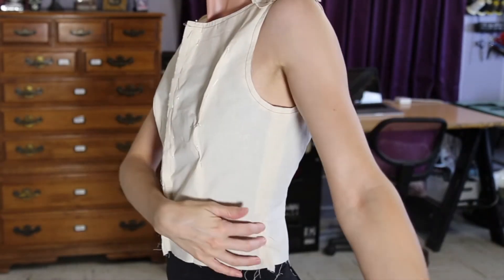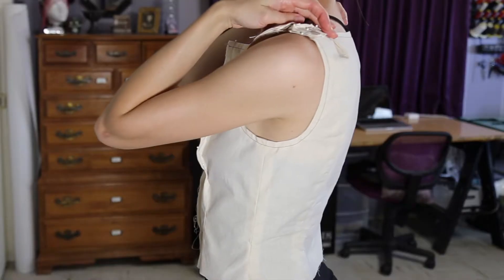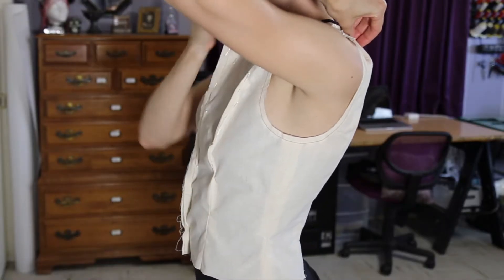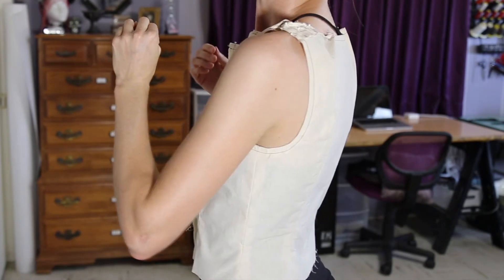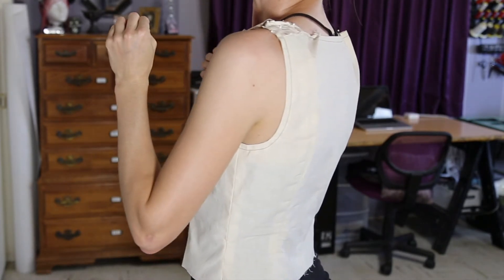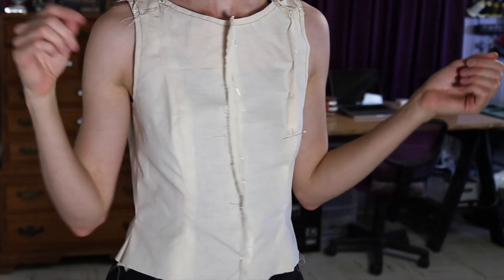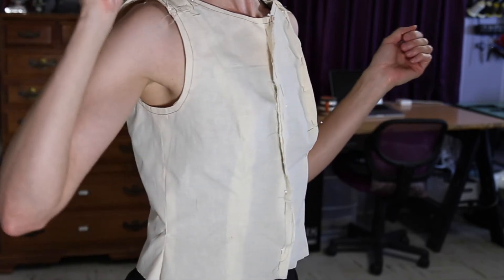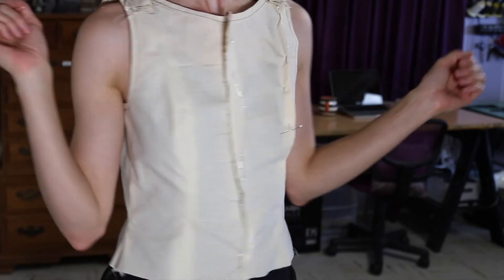I'll take the fullness out of the side front piece. On the back I'm pinning two darts at the neck where it was gaping. Don't be afraid to re-pin and refit as many times as you need until you like the way it fits, but also keep in mind it still might fit differently when it's made out of the fashion fabric.